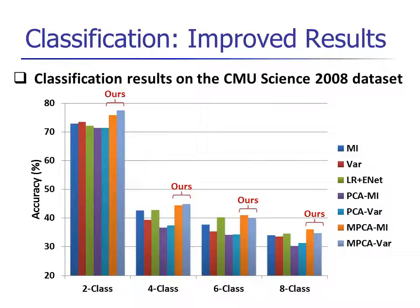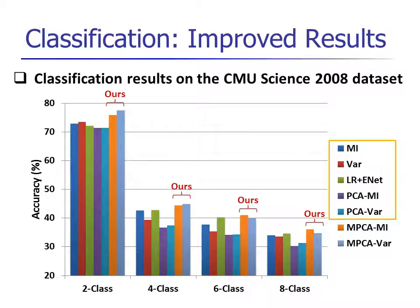We evaluate our two MPCA-based methods on a challenging multi-class fMRI dataset from CMU against five other competing methods on four tasks. On the whole, our two methods achieve the top two classification accuracy, outperforming the other five methods.